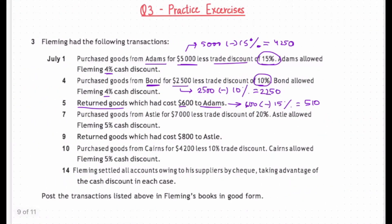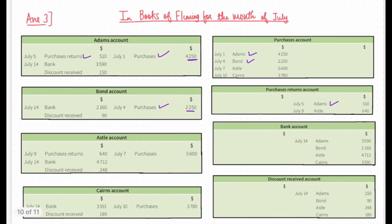July 7th — purchased goods from Aster for $7,000 less a trade discount of 20%, followed by a 5% cash discount. The purchase cost here will be $7,000 less 20% of $7,000, which will be $5,600. The entry will be Purchase account debit to Aster account. In Purchases account, Aster account will be debited, and in Aster account, Purchases will be credited.